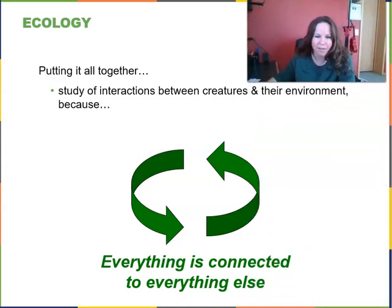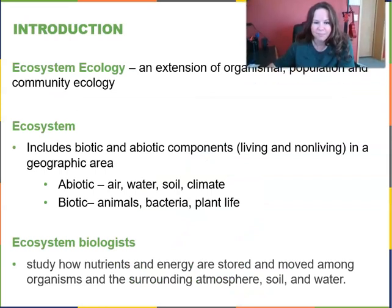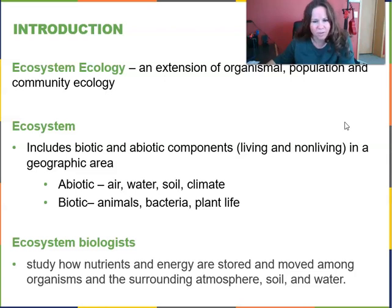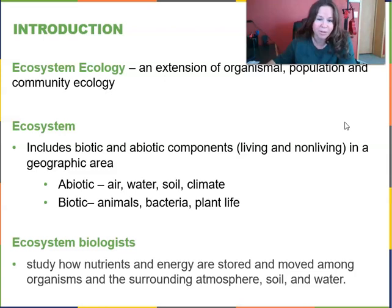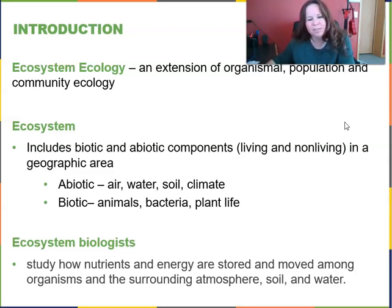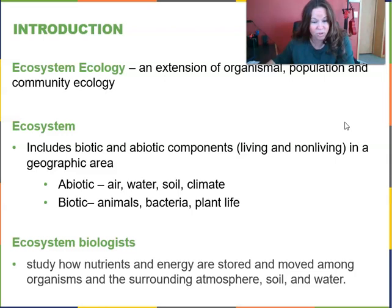Ecology — putting it all together — is the study of interactions between creatures and their environment, because everything is connected to everything else. Ecosystem ecology, our study for this week, is an extension of organismal, population, and community ecology. We've already studied population and community ecology, while organismal biology is just the study of single organisms. Now we're going to study the whole ecosystem and how everything in an ecosystem is interconnected. An ecosystem includes both the biotic and abiotic components. Biotic means living, and abiotic means non-living, and an ecosystem is within a geographic area.